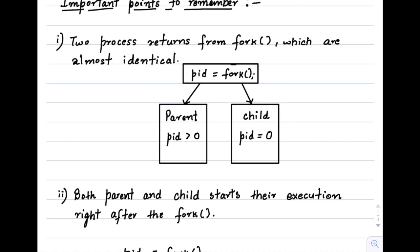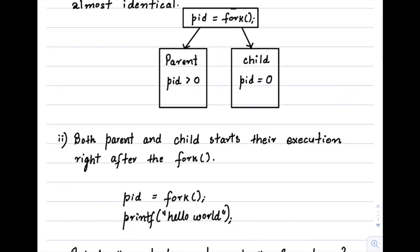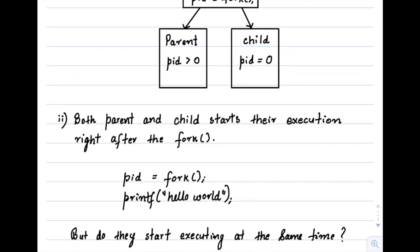Another important point: once the fork call returns with some value (PID here), both the parent and the child start execution from the next line itself. So both the parent and child will start execution from 'print hello world'. This is very important in knowing where execution starts for both parent and child after fork returns.